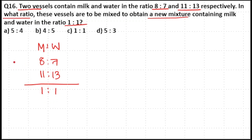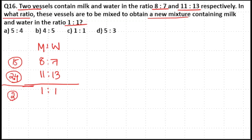8 plus 7 is equal to 15 parts. 11 plus 13 is equal to 24 parts, and in the resultant mixture 1:1 is equal to 2 parts. Now the LCM of 15, 24, and 2 is equal to 120.